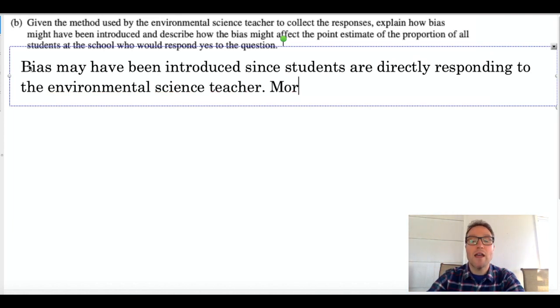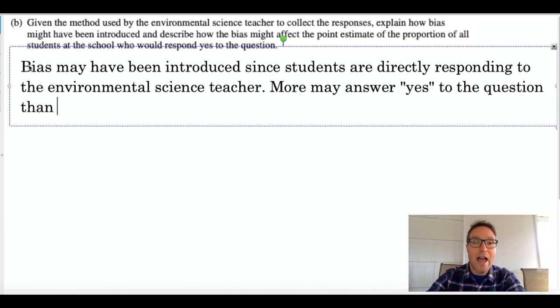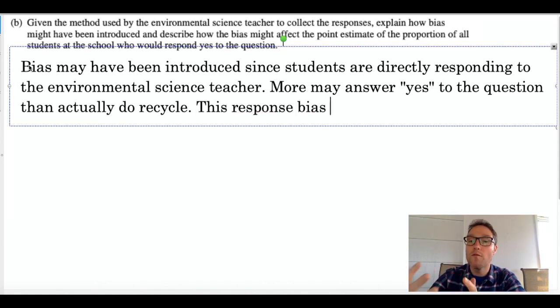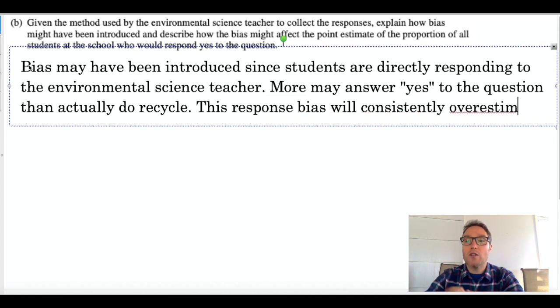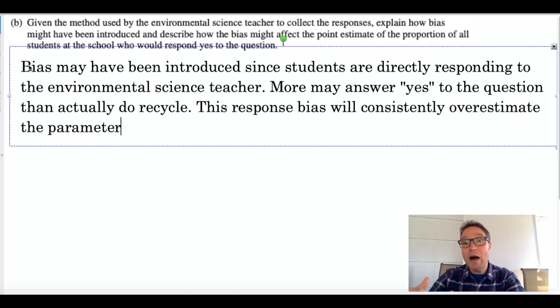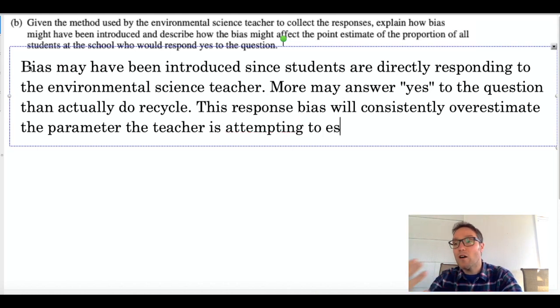Because the student may want to please the environmental science teacher, so they might give a positive answer when the truth is that they don't recycle. So I'm going to type that up. More students may answer yes to the question than actually recycle, and so what is that going to do to the point estimate? So the point estimate of the proportion of all students who would respond yes is going to be overestimated consistently or systematically. When you're talking about bias, the definition of bias is any systemic issue that may overestimate or underestimate consistently, so we want to indicate that in our answer. So that's my answer for part B.